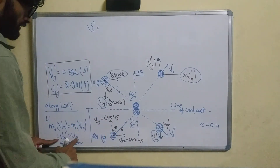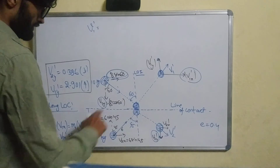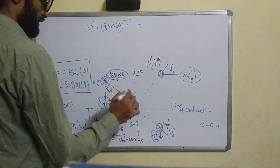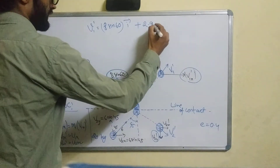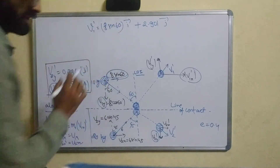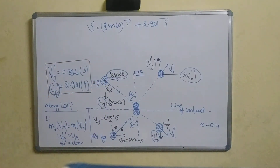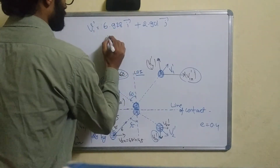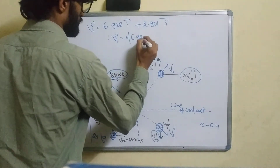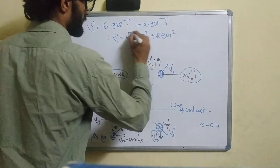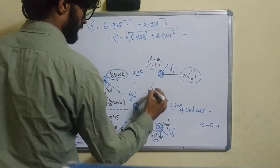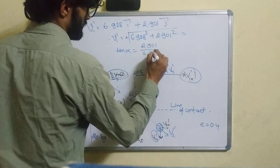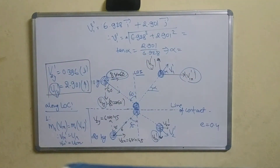So v1x' = 2.901 m/s and v2x' = 6.928 m/s. The magnitude of v1' is found as the square root of (6.928)² + (2.901)². The angle alpha is given by tan(alpha) = 2.901 / 6.928.